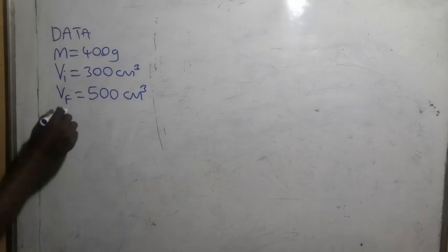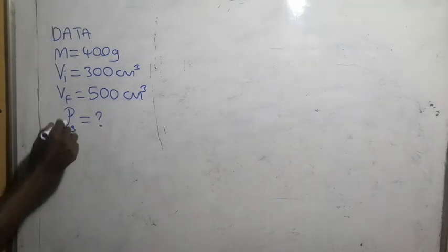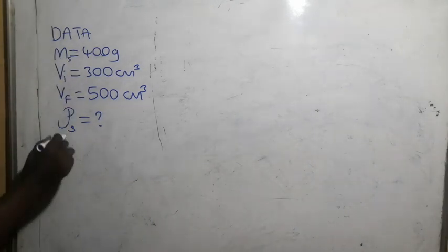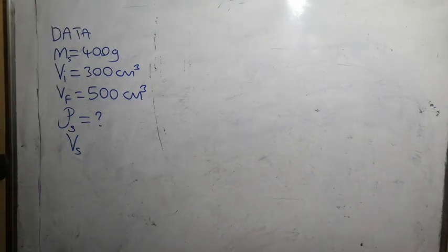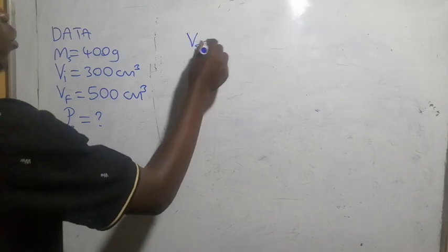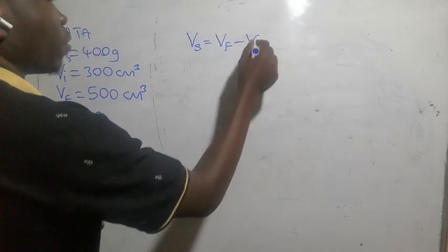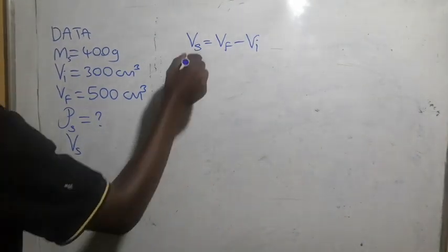They want us to find the density of the stone. We have the mass of the stone, but we don't know the volume of the stone. So we need to find the volume of the stone. Volume of the stone equals V-final minus V-initial.